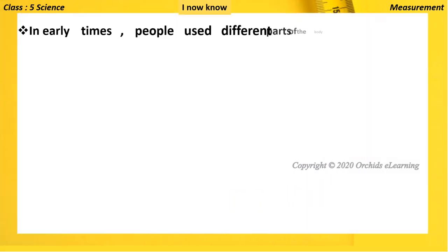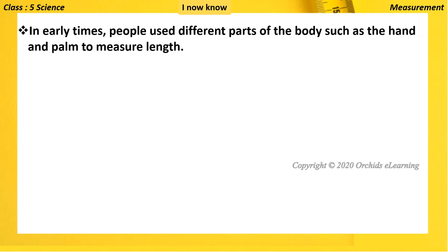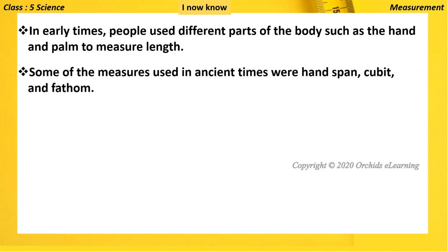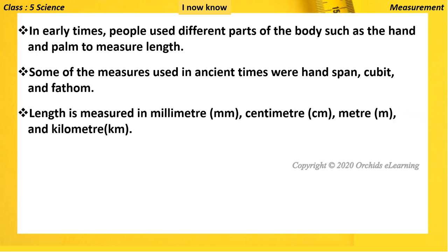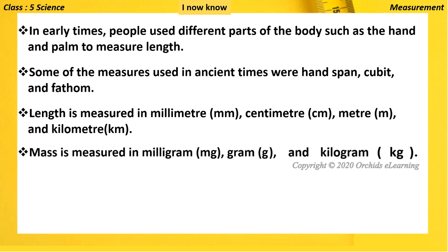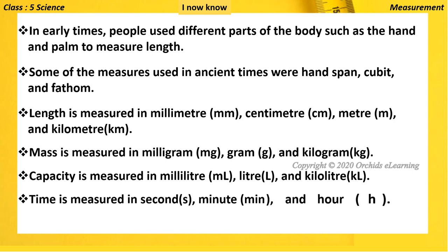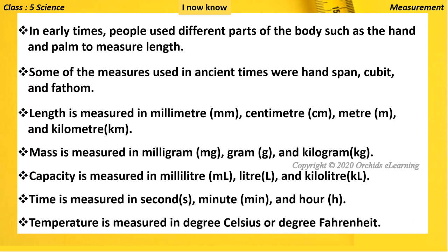In early times people used different parts of the body such as the hand and palm to measure length. Some of the measures used in ancient times were hand span, cubit, and fathom. Length is measured in millimeter, centimeter, meter, and kilometer. Mass is measured in milligram, gram, and kilogram. Capacity is measured in milliliter, liter, and kiloliter. Time is measured in seconds, minutes, and hours. Temperature is measured in degrees Celsius or degrees Fahrenheit.